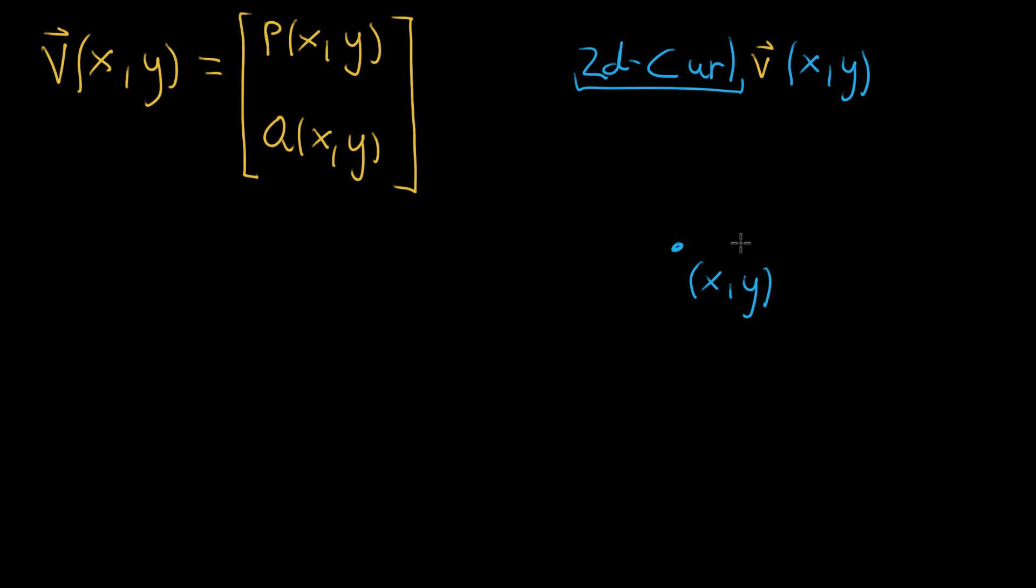And then let's say that to the right of it, you have a vector pointing straight up. Above it, in the vector field, you have a vector pointing straight to the left. To its left, you have one pointing straight down. And below it, you have one pointing straight to the right.